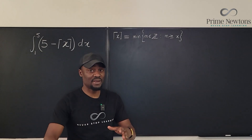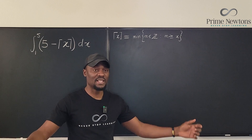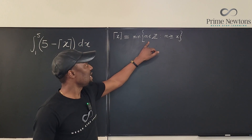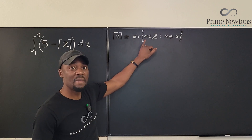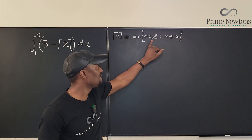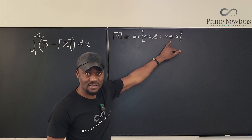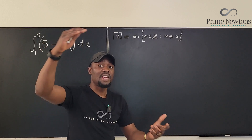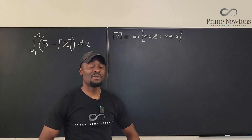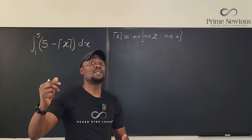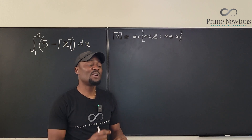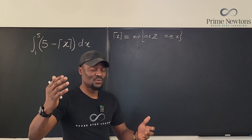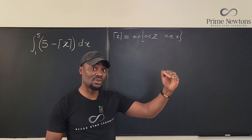I'm going to start with the definition so we have an idea of where we're going. The ceiling of x is the smallest integer — the minimum member of the integer set that is greater than x. For example, the ceiling of 1.5 is 2, the ceiling of 1.1 is 2, and the ceiling of 1.0001 is 2.